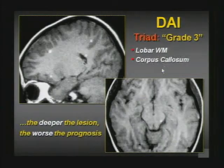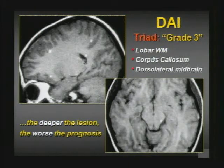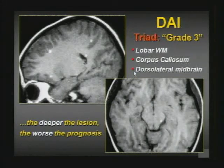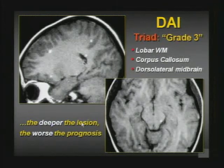The final triad member is shearing injury of the brainstem. Grade 1 is lobar white matter, grade 2 is corpus callosum, and grade 3 is the dorsolateral rostral brainstem. The higher the grade and the deeper the lesion, the worse the mechanism and the worse the prognosis.